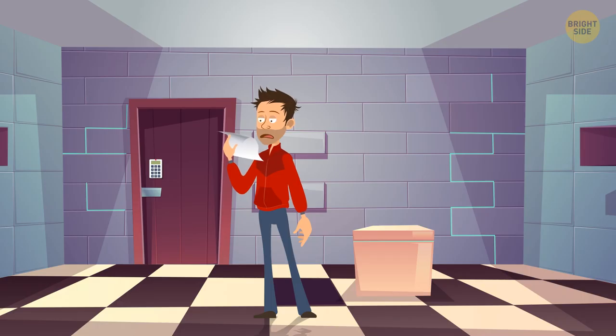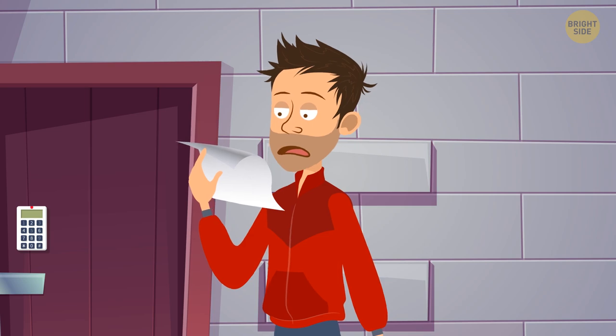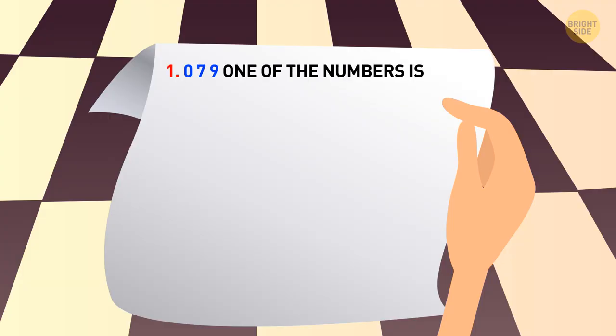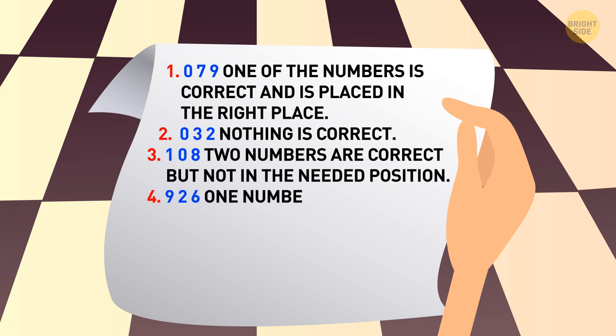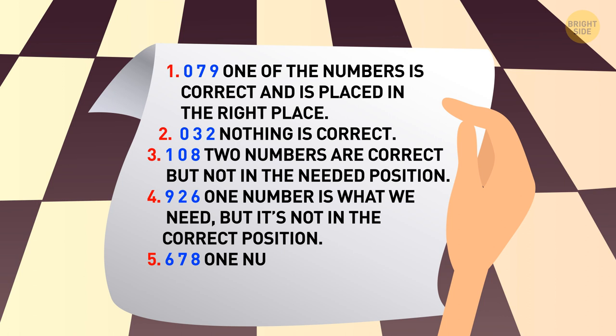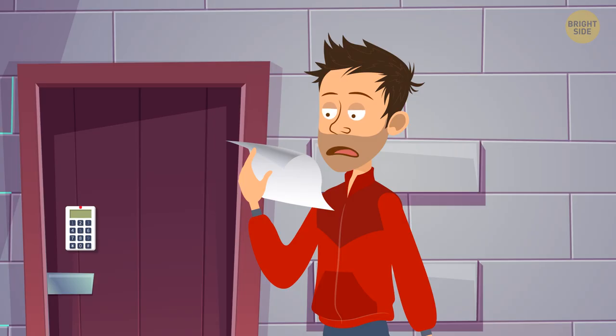Bobby needs to crack a secret code using the following clues. One of the numbers is correct and is placed in the right place. Nothing is correct. Two numbers are correct but not in the needed position. One number is what we need but it's not in the correct position. One number is okay but not put in its right place. Have you figured it out?